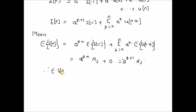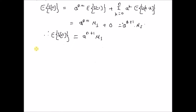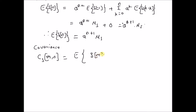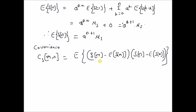Therefore, the expectation of S of n — the current state — is equal to A power n plus 1 into mu S, where A is the coefficient in the state model. Now let us look at the covariance term. The covariance C S of m comma n is equal to, by definition, the expectation of the product of the two differences: S of m minus expectation of S of m, times S of n minus expectation of S of n.